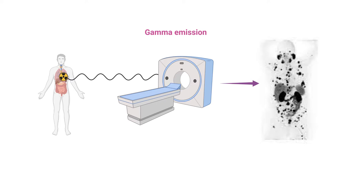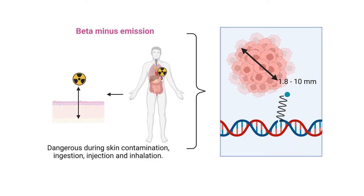Constant exposure is a radiation source from the outside and the amount of radioactivity you are exposed to accumulates. Beta minus emission is dangerous when ingested and can also irradiate you from the outside, but if it's on your skin it will penetrate — indeed, sometimes it's used for treating skin cancer. It has a linear energy transfer high enough to cause cytotoxic damage to tissues and it travels quite far, up to 10 millimeters. It is dangerous when contaminated on the skin, ingested, injected, or inhaled.